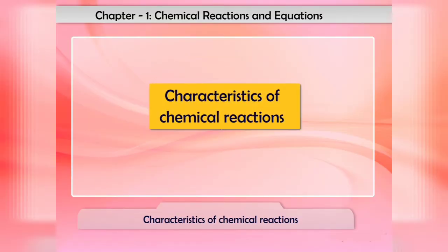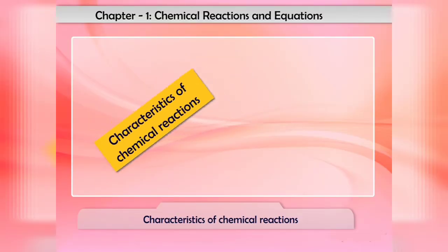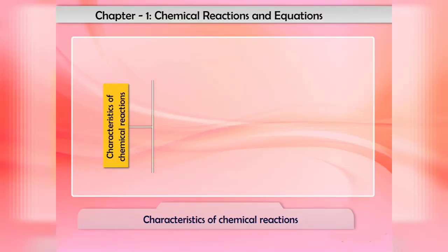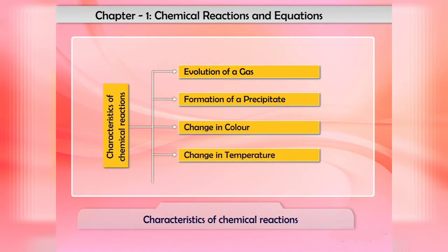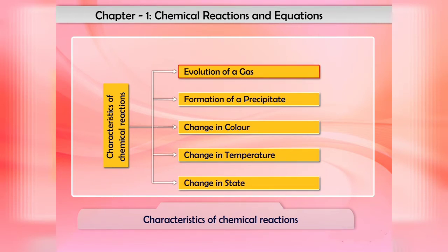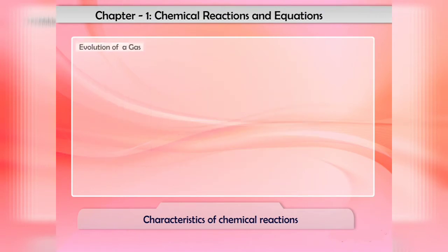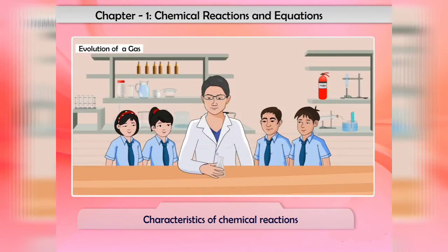The characteristics of chemical reactions are: evolution of a gas, formation of a precipitate, change in color, change in temperature, and change in state. Let us discuss them one by one in detail.